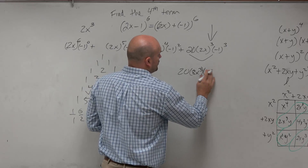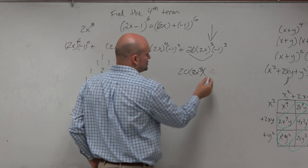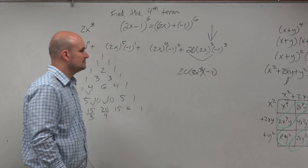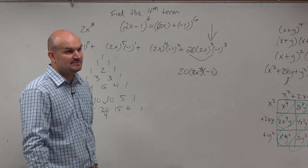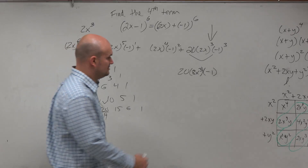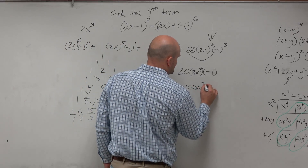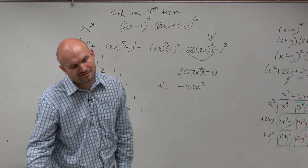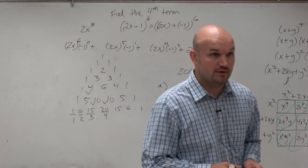And then we have negative 1 cubed, which is negative 1 times negative 1 times negative 1, which is just negative 1. Now I do 20 times 8, which is 160, times negative 1. So I have negative 160x cubed — that would be answer A on a multiple choice question.